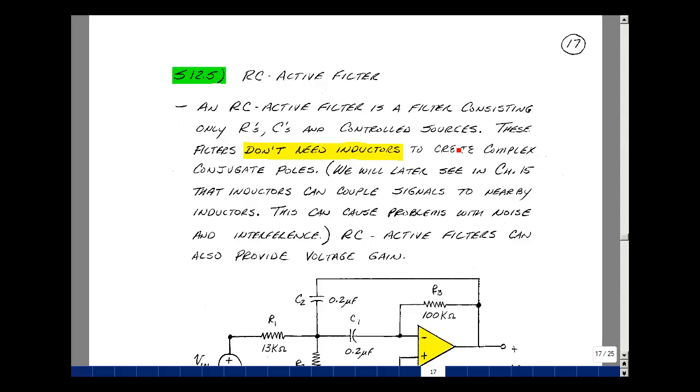An RC-active filter is a filter consisting of only resistors, capacitors, and controlled sources. These filters don't need inductors to create complex conjugate poles. We'll later see in Chapter 15 that inductors can magnetically couple signals from nearby inductors, and this can cause all kinds of problems with noise and interference. RC-active filters can also provide voltage gain.